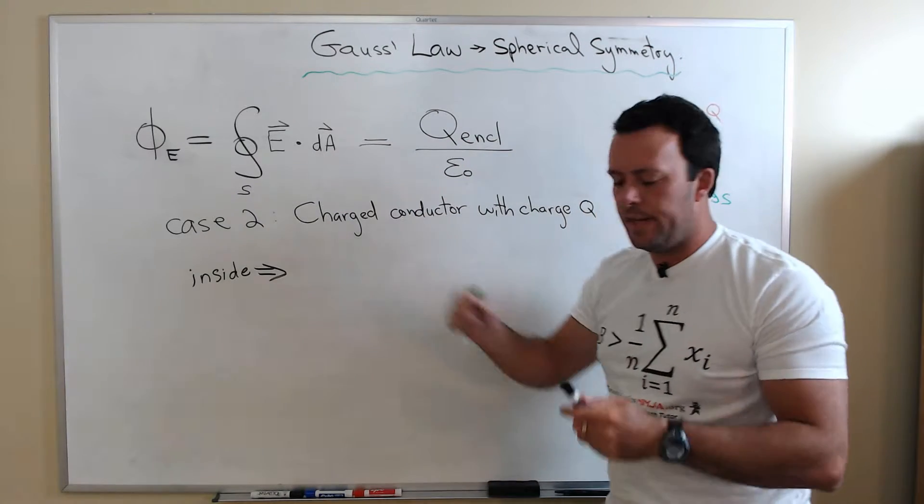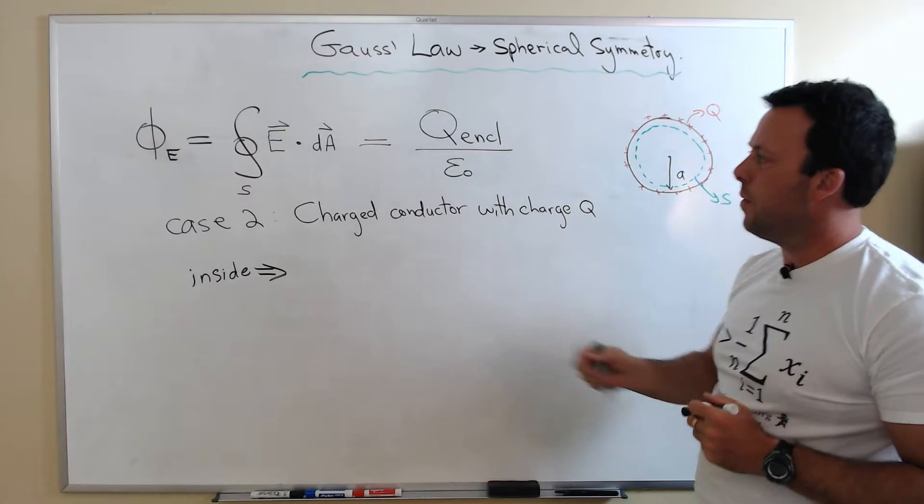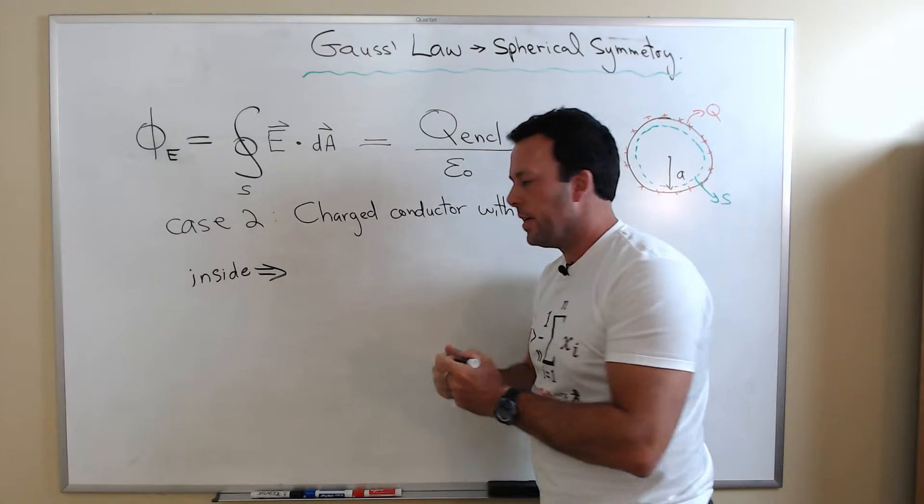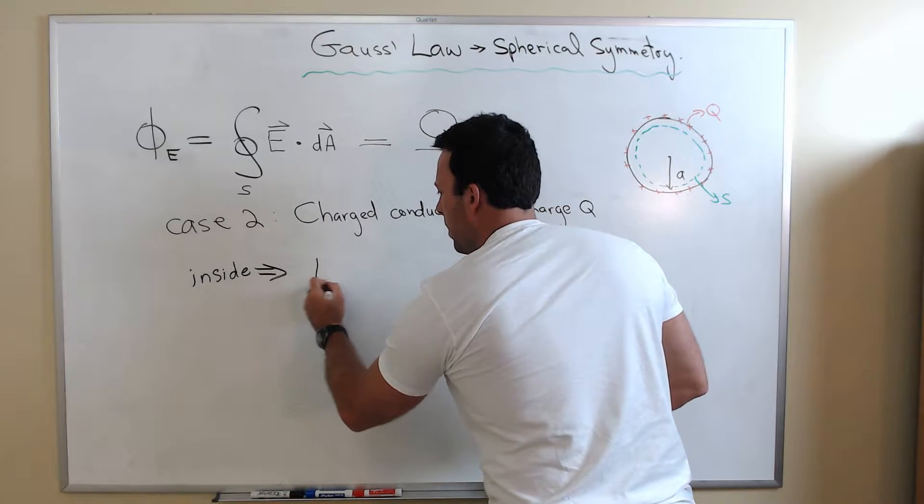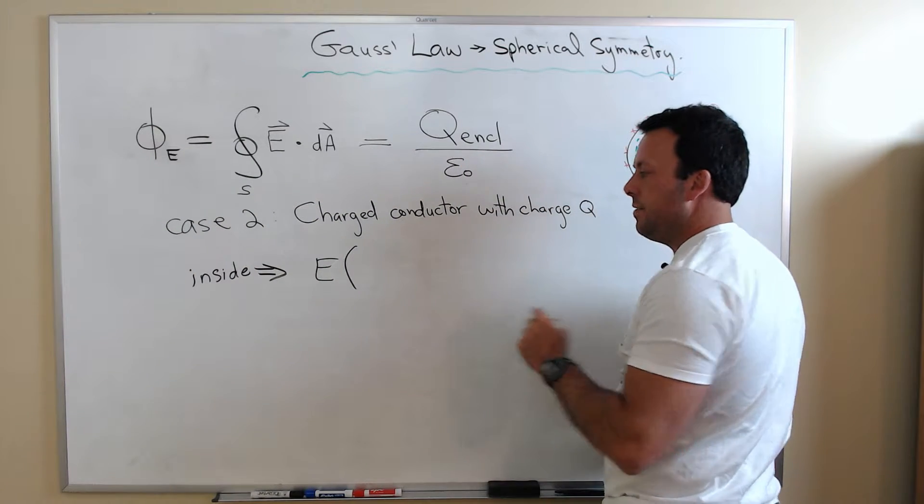So let's start with the left-hand side of Gauss's Law. Again, it's the same kind of problem as before. Since I have a spherically symmetric object, it's going to look exactly like the point charge. So E times the surface area of the sphere.